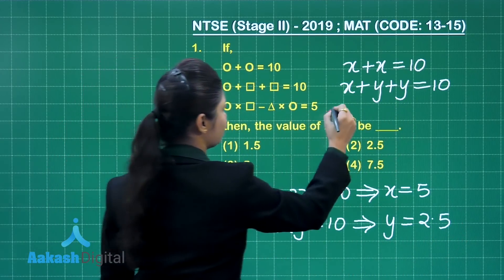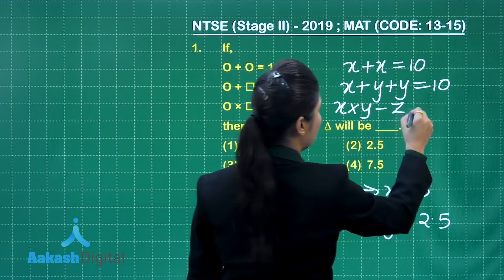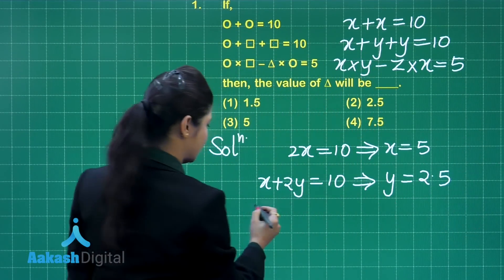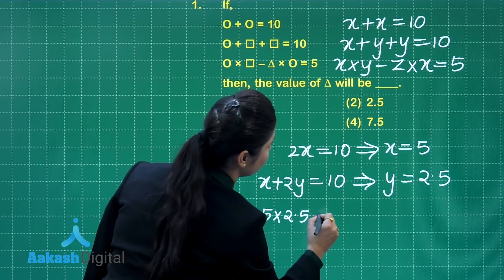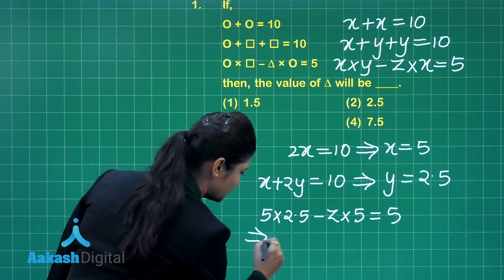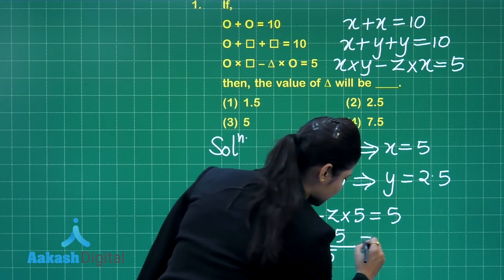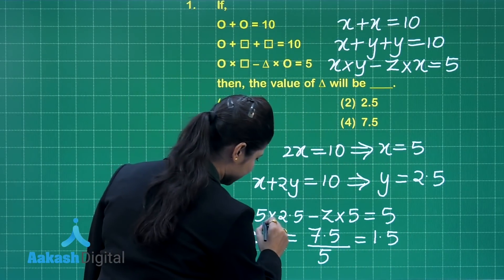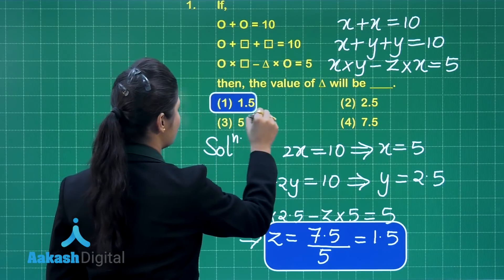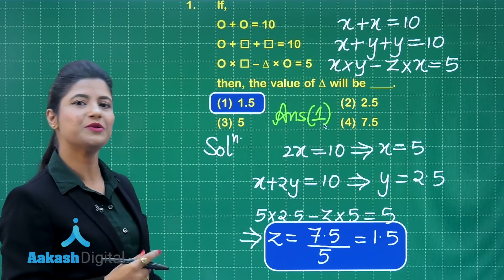Now for the third equation, I have x (circle) multiplied by y (square) minus z (triangle) multiplied by x equals 5. Substituting x equals 5 and y equals 2.5: 5 times 2.5 minus z times 5 equals 5. Simplifying, z equals 12.5 minus 5, that is 7.5 divided by 5, which gives z equal to 1.5. So the value of the triangular symbol is 1.5, which is option number 1. I hope that is clear. Let us proceed to the next question.